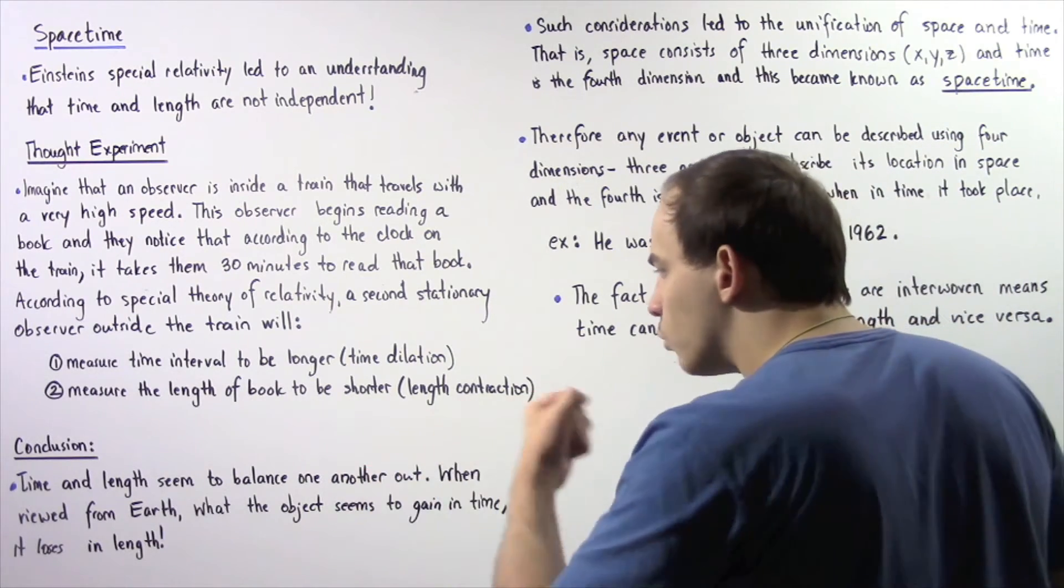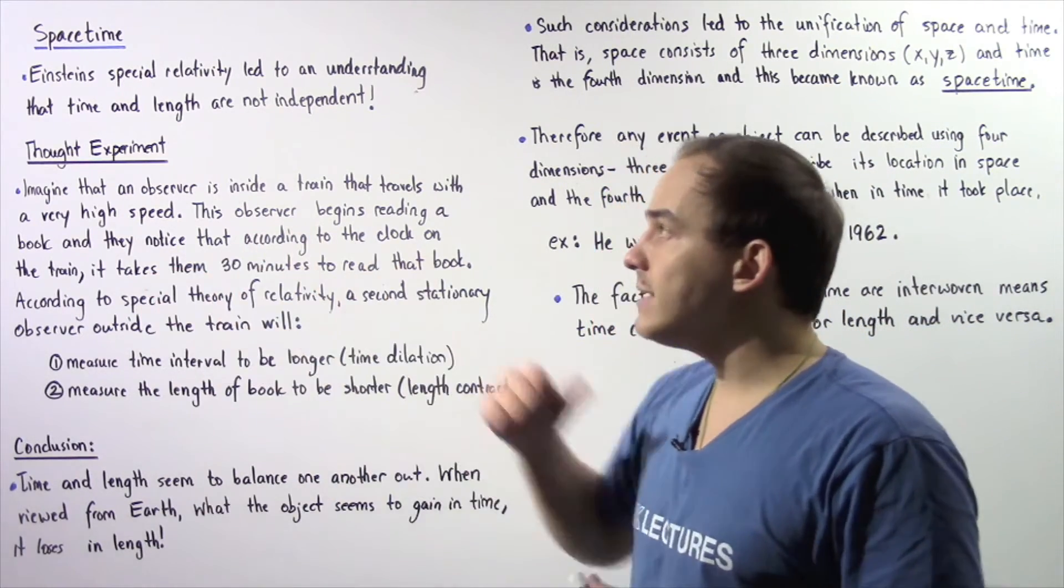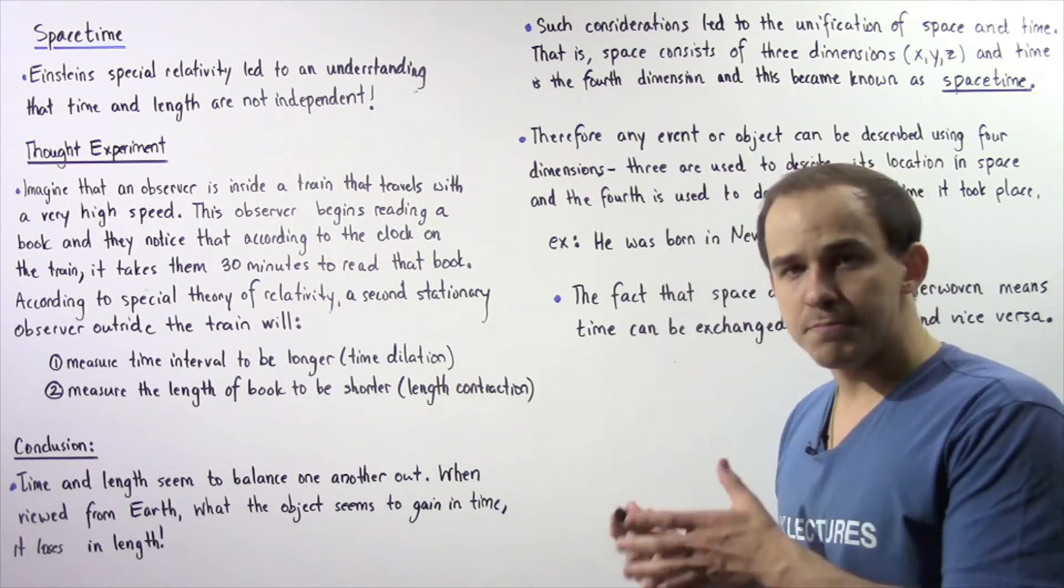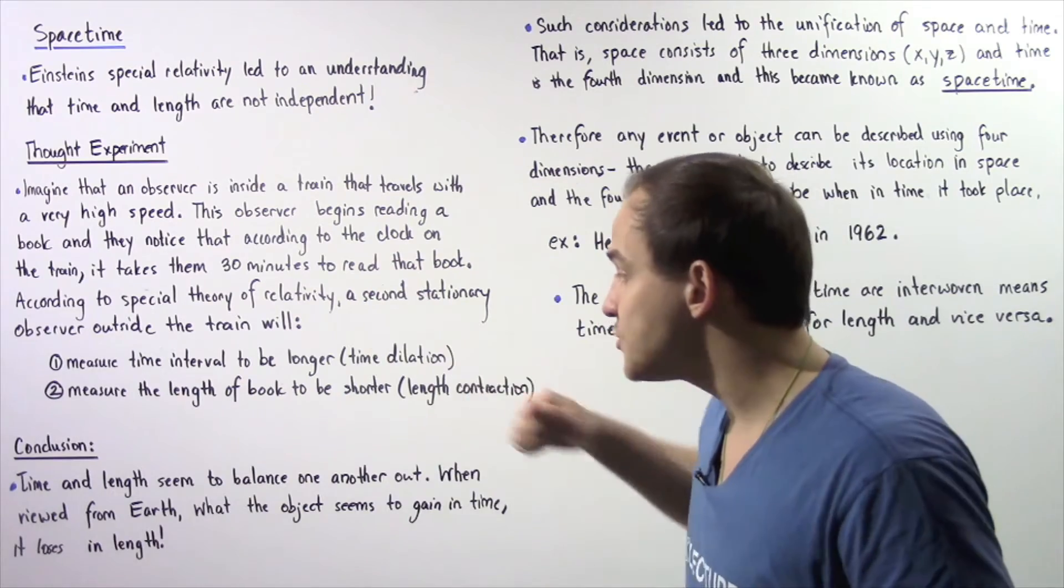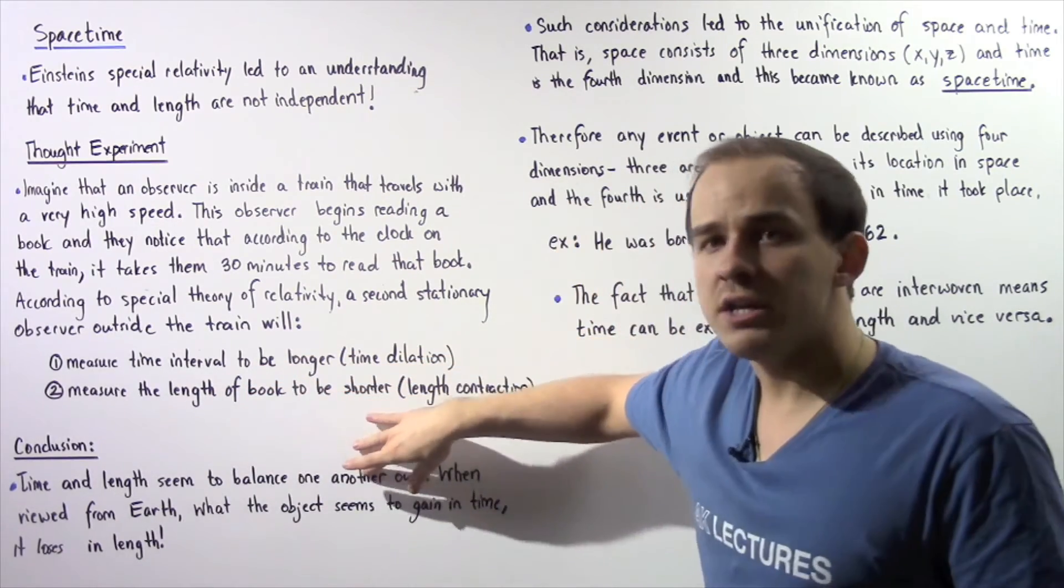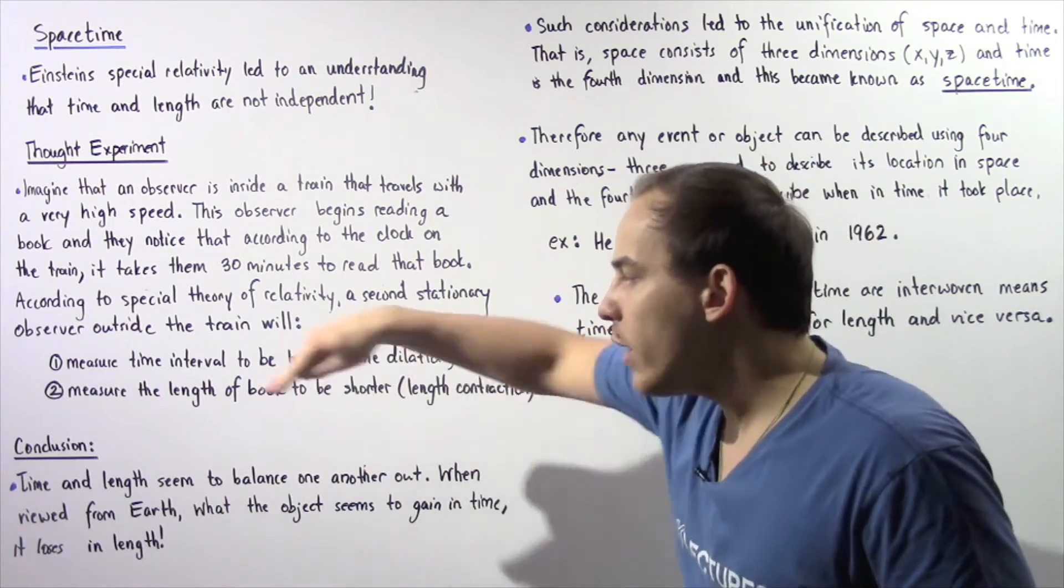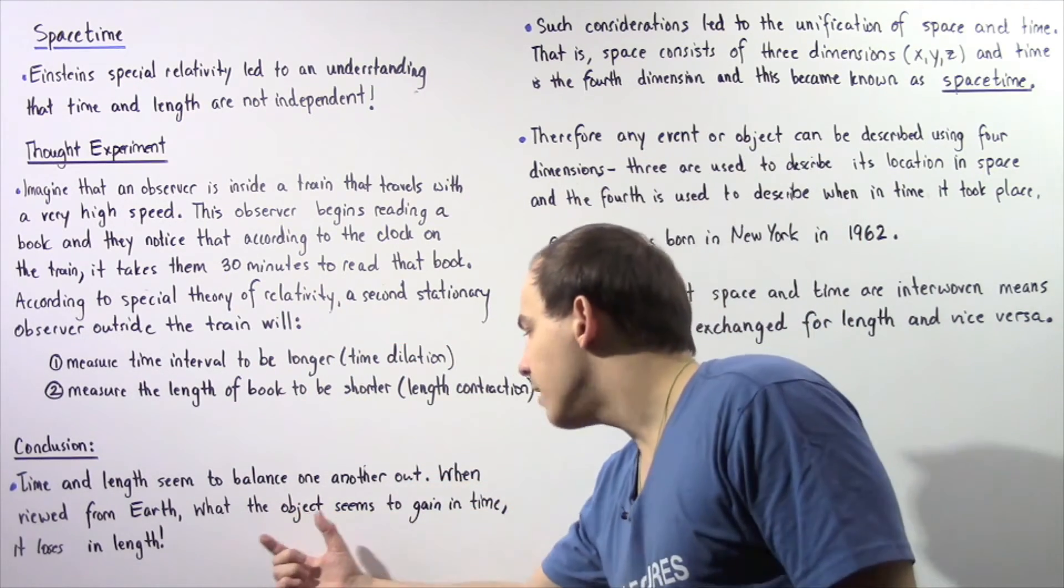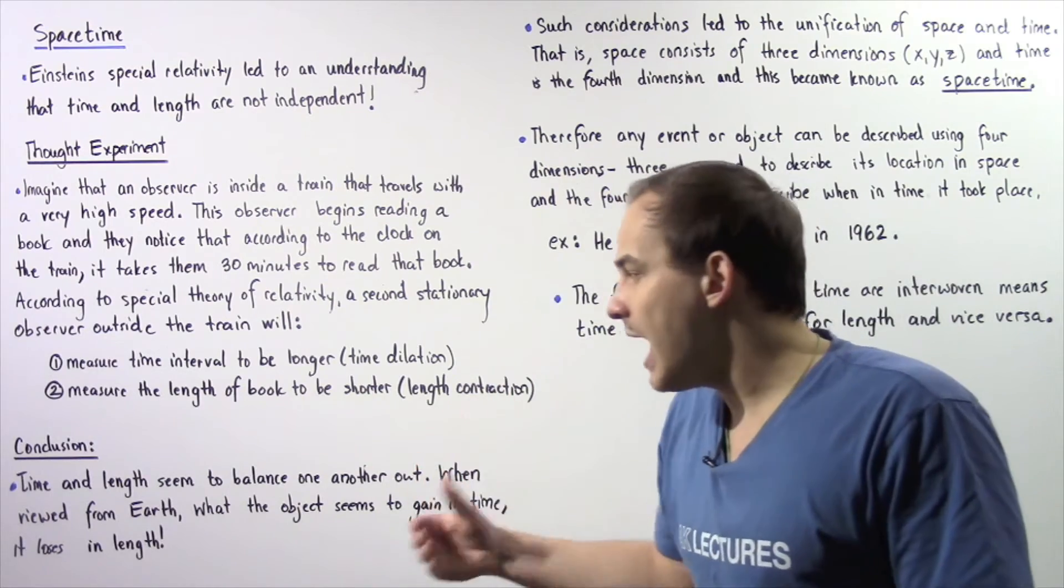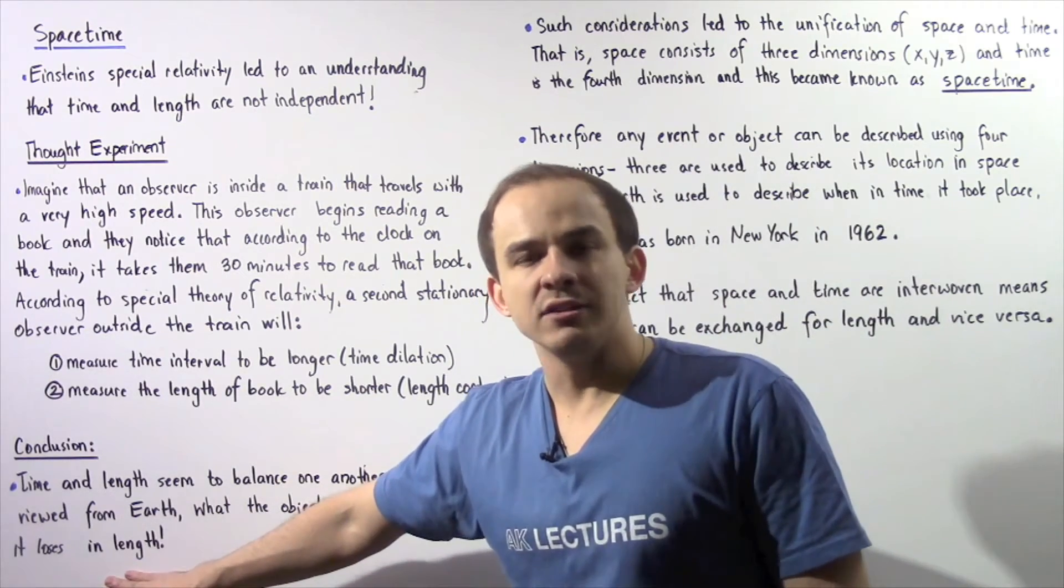We can conclude the following important point based on this thought experiment: time and length, or time and space, seem to balance one another out. When viewed from the Earth, our inertial reference frame, what the object seems to gain in time, it loses in length.